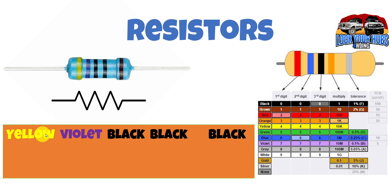But here we go, yellow. And if we look at yellow here, yellow is number four. And then next to that we've got violet. And violet or purple is number seven. So we've got four, seven, and then black is zero. And then we have our last band for our values which is our multiplier.